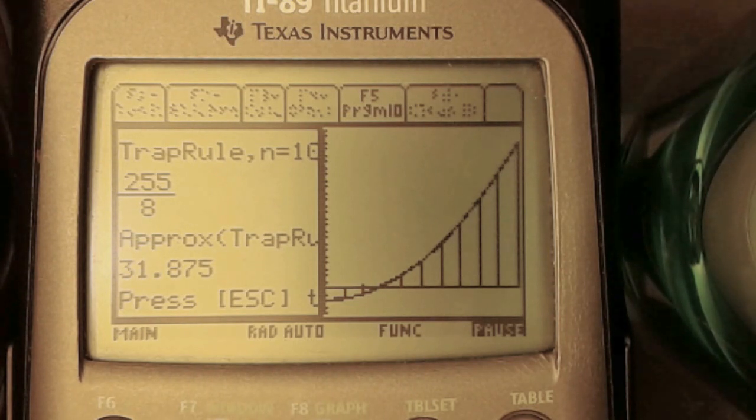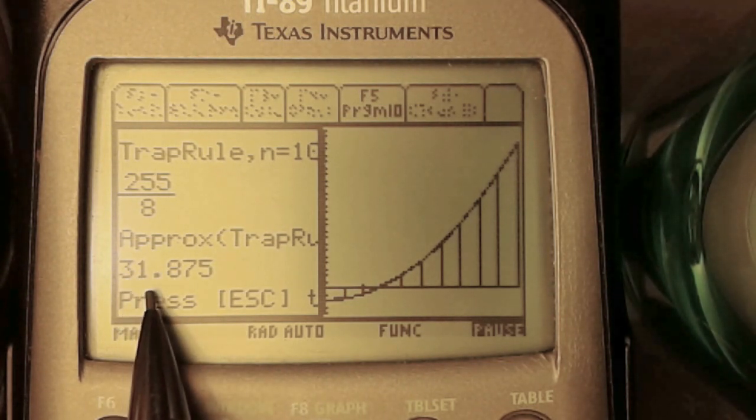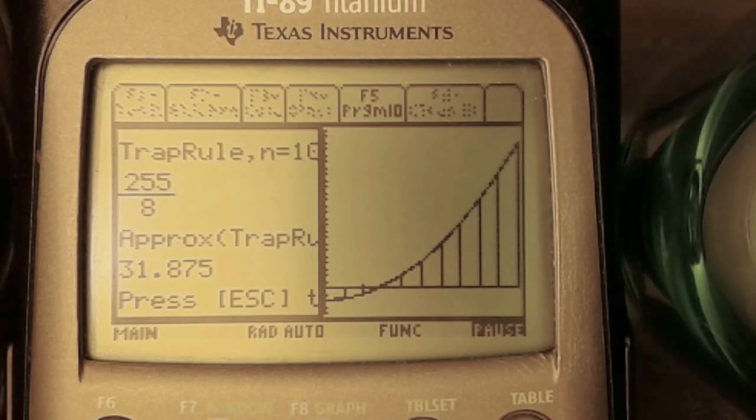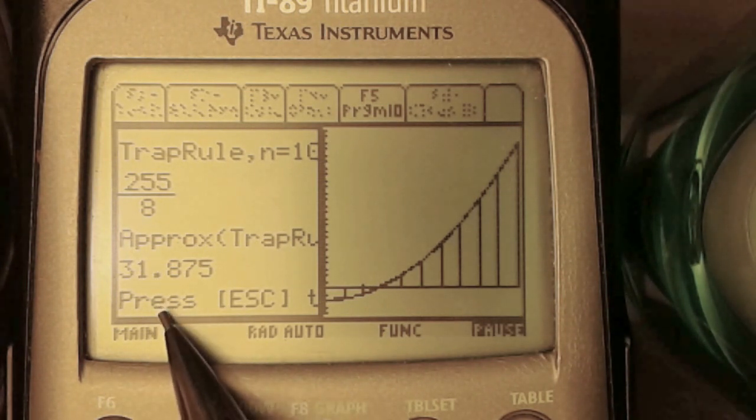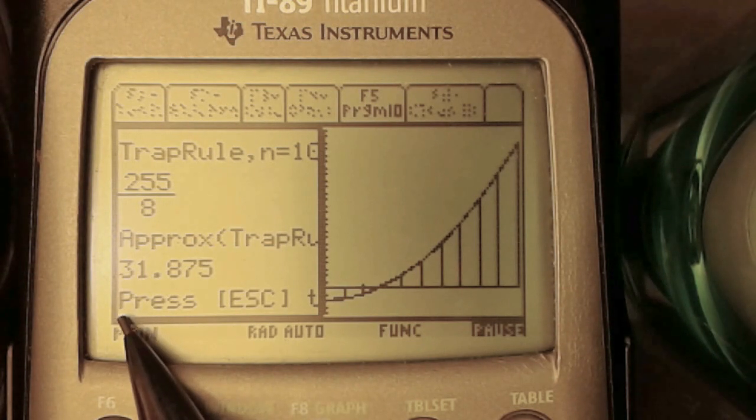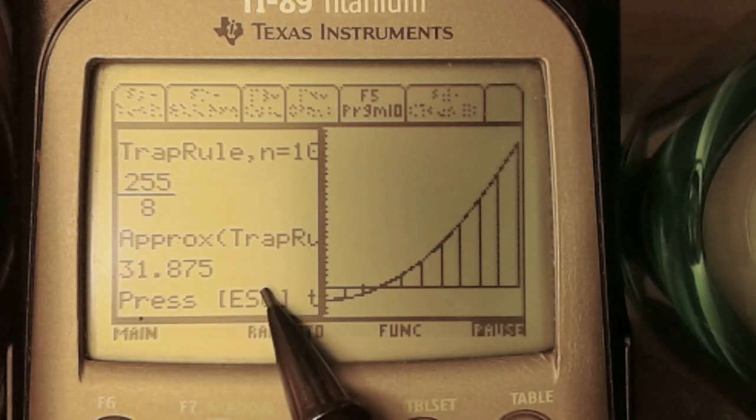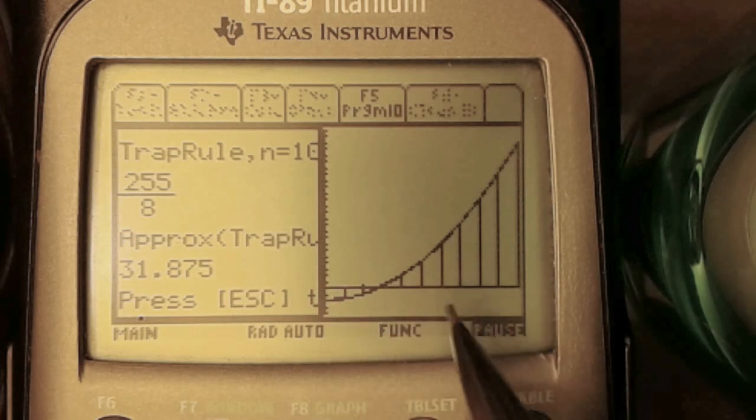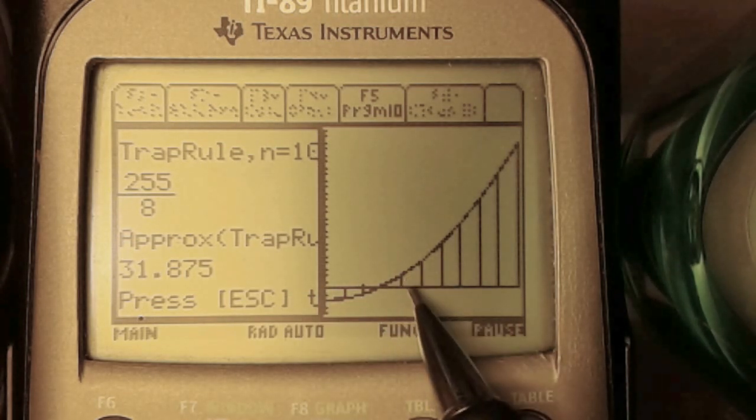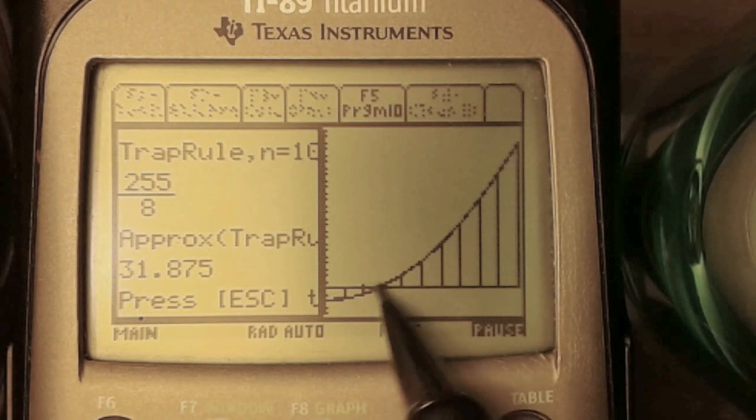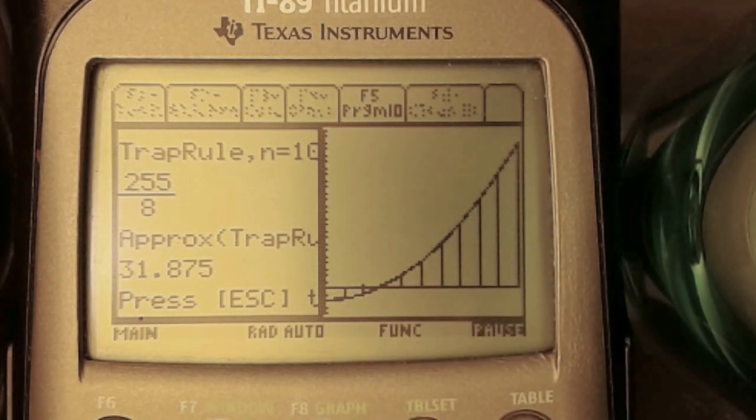This trapezoidal rule gives us an approximation of 31.875. Our midpoint formula, which was a pretty good approximation, was 31.5625. But this would be more accurate because we can see that the trapezoid covers the actual function, giving us a more or less equal area. Remember that the trapezoidal rule isn't always the best method.